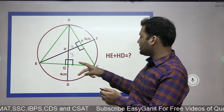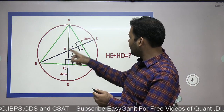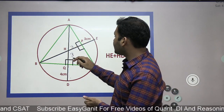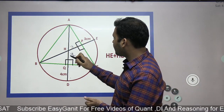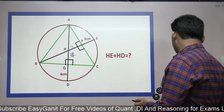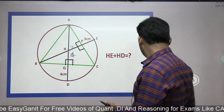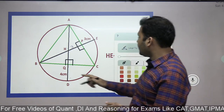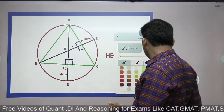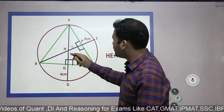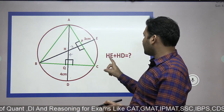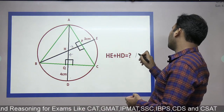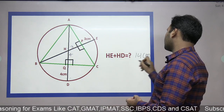So HE plus HD: HE equals HP plus PE, which is 3 plus 3 equals 6. QD is 4, so HQ is also 4, meaning HD equals HQ plus QD equals 4 plus 4 equals 8. Therefore HE plus HD equals 6 plus 8 equals 14 cm. This is the answer.